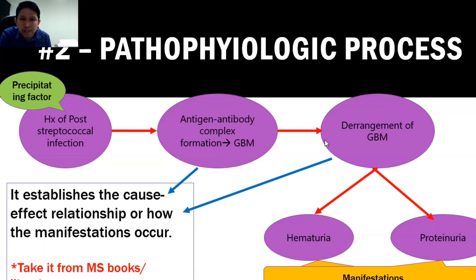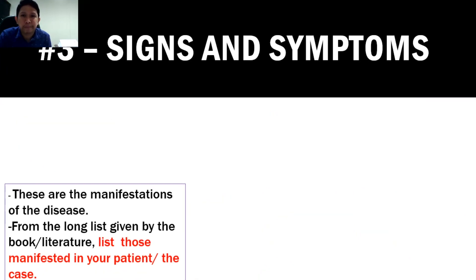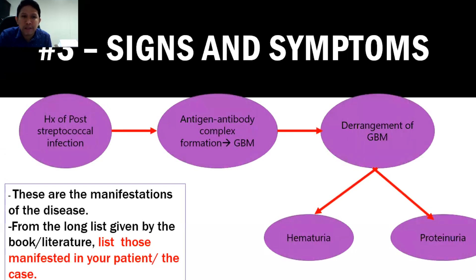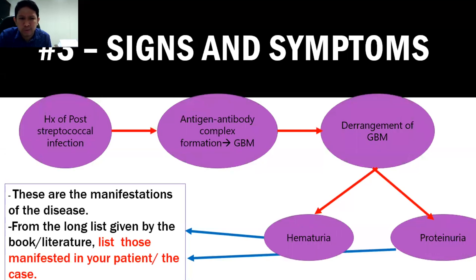You can get this information from your medical-surgical nursing books or reliable sources like Medscape. For signs and symptoms, your book will list many, but you only need to include in your mind map the ones actually presented by your patient in the hospital or specified in your given scenario.